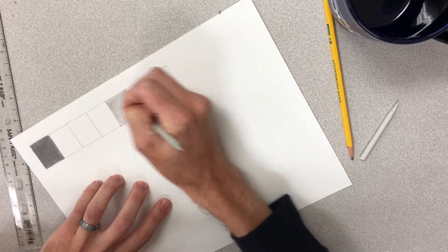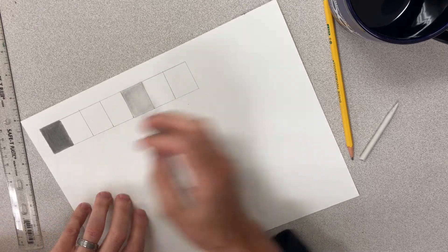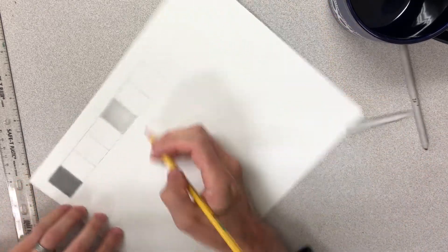So I'm burnishing this into the paper using the blending stump. So I picked this one. My last one's going to be white, so that'll be my lightest. And this one I want to be actually lighter than that, so that's why I picked a third spot there.